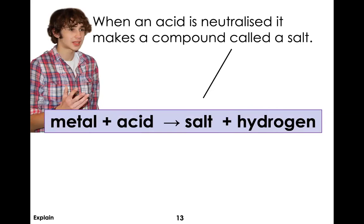Acids neutralized by a metal end up creating a salt and releasing hydrogen gas — the acid loses that hydrogen that causes its acidity. So the core equation is: metal + acid → salt + hydrogen gas. You must know this equation. We can give you different metals and different acids, and you can determine what salt is produced and that hydrogen gas is also made. Equally, given the salt and the hydrogen gas, you can work backwards to identify the metal and acid used.